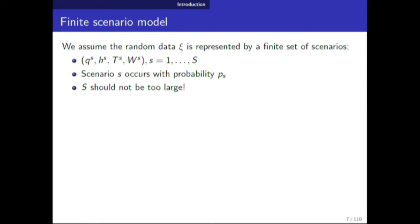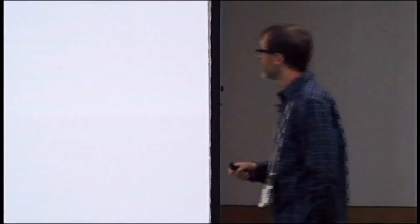I'm going to work with a finite scenario model — assuming uncertainty is represented by a finite set of scenarios S. All random coefficients, right-hand sides, and constraint matrices are given as a list of capital-S scenarios, each with probability p_s. I need to assume this set is not too large — maybe a couple hundred or a couple thousand — something I can work with.